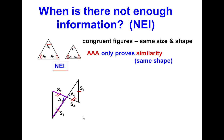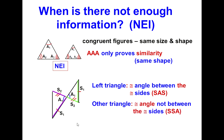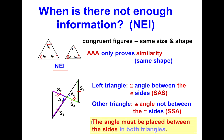Here's a situation where on the left triangle we could go from S to A to S. However, between the two purple lines is the included angle, but there is no included angle between the two green sides — this angle is not included. That's why it reads SSA, which does not prove congruence. This would also be NEI because the angle must be placed between the two sides in both triangles in order to be congruent by SAS.